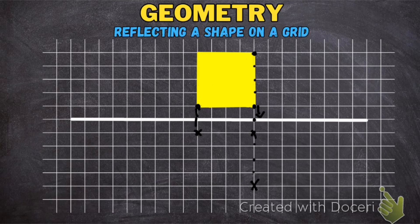And finally this corner here — one, two, three, four, five; one, two, three, four, five. Then using my ruler, I'm going to join the crosses up. And that is where my reflected shape will be.